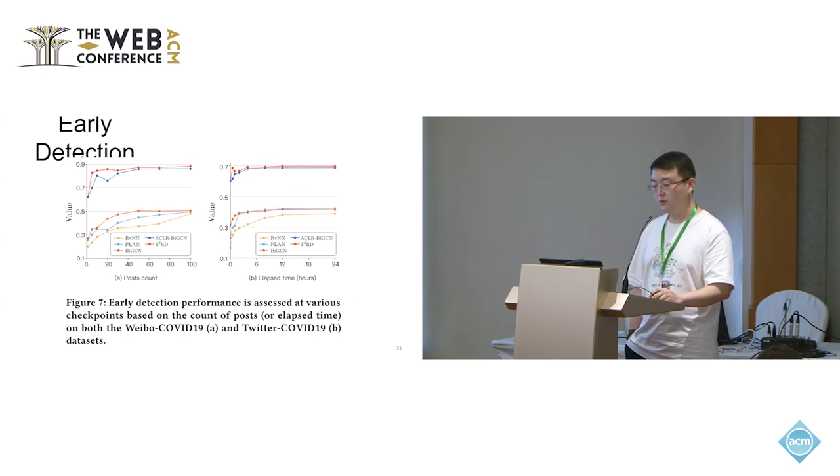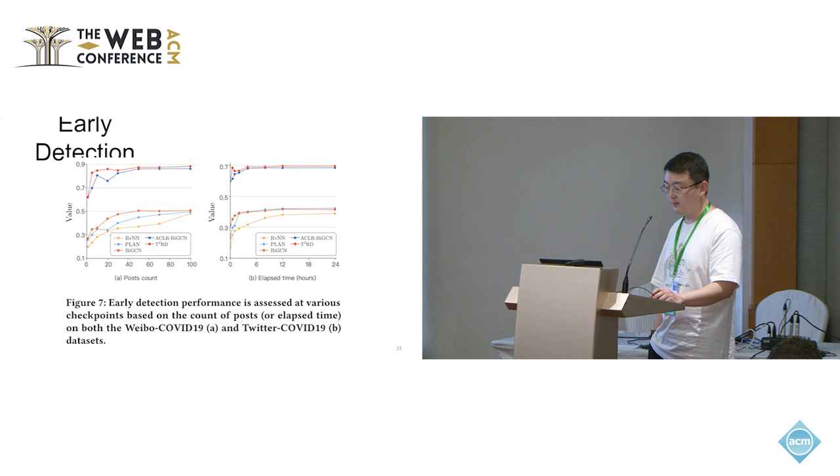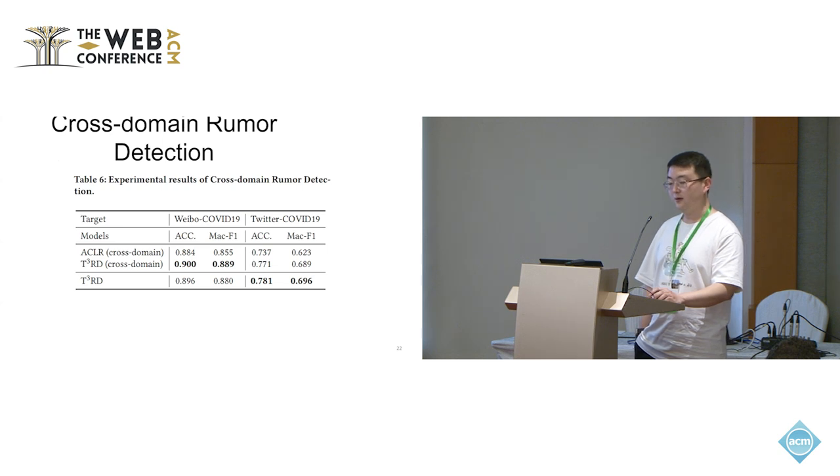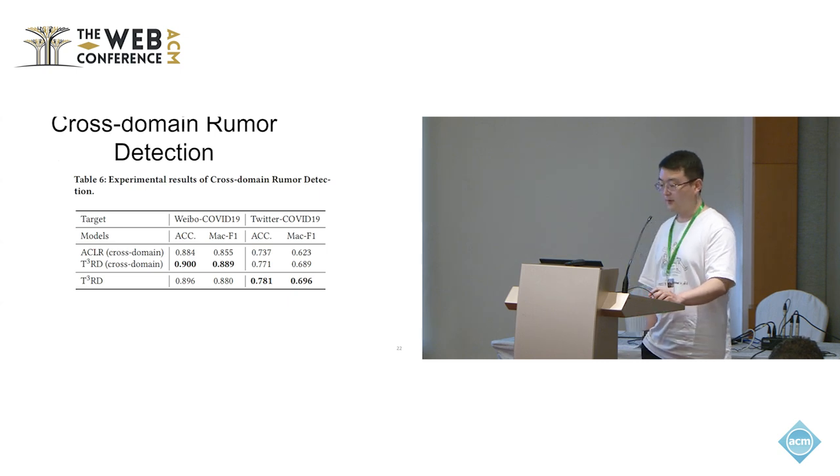A detection model should also aim to detect rumors as early as possible. We conduct early detection experiments to assess whether the model has an advantage in identifying rumors properly. We evaluate the model's early rumor detection performance from two perspectives: the number of posts and the time of publications. We also conduct rumor detection in a setting involving only cross-domain scenario, and our results show favorable performance.